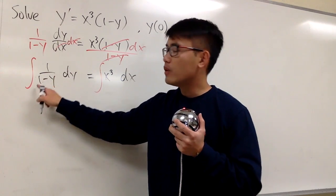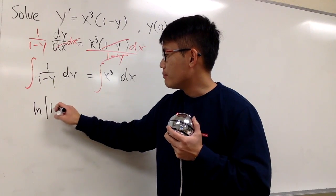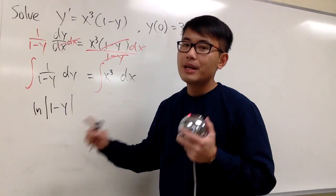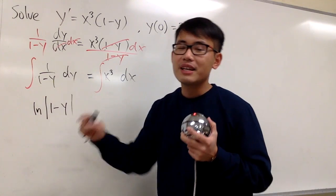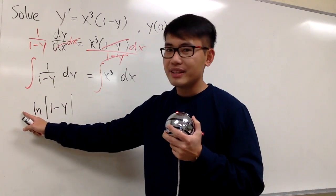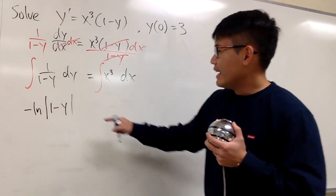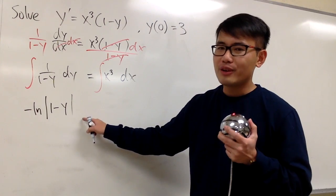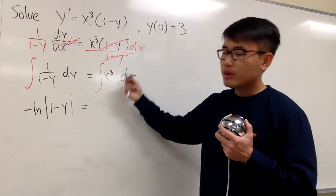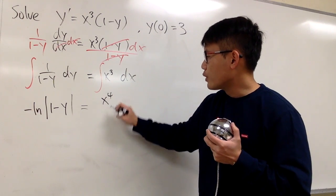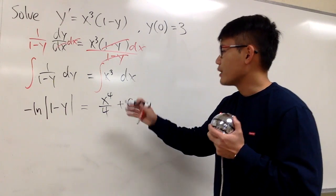The integral of 1 over 1 minus y is going to be ln of the absolute value of 1 minus y. But remember, the derivative of 1 minus y is negative 1, so we have to divide by negative 1 — it's the same as putting a negative in front. Don't put down plus c1 here. This is equal to the integral of x to the third power, which gives us x to the fourth power over 4, and on the right-hand side we put down plus c1.